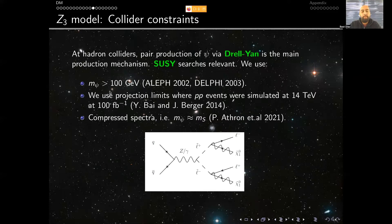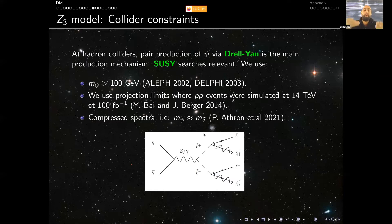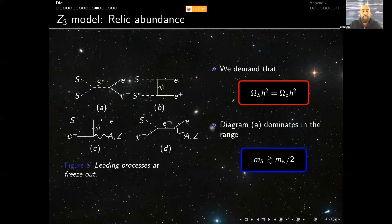We used constraints set by different groups. In particular, vector-like leptons are charged particles and their masses should be above 100 GeV. We also used some projection limits from simulated events of proton-proton collisions at 14 TeV with 100 inverse femtobarns of integrated luminosity, and also bounds from what is called the compressed spectra regime, where both particles are close in mass. This type of collider constraint turns out to be highly important in order to constrain our parameter space.